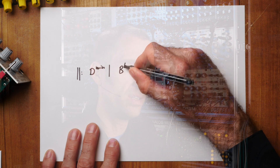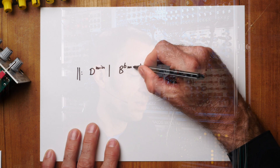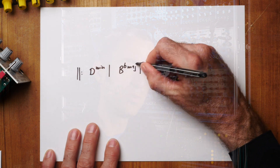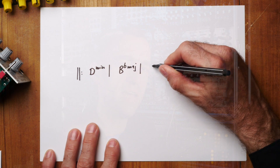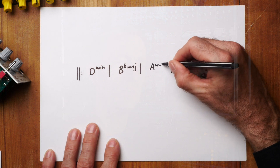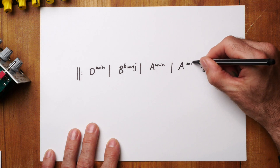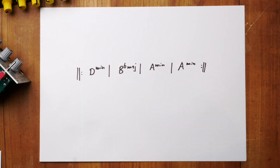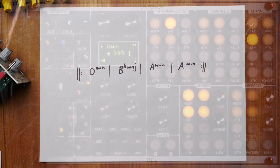Let's try this out. Let's try a chord progression of one bar D minor, one bar B flat major, and two bars of A minor.